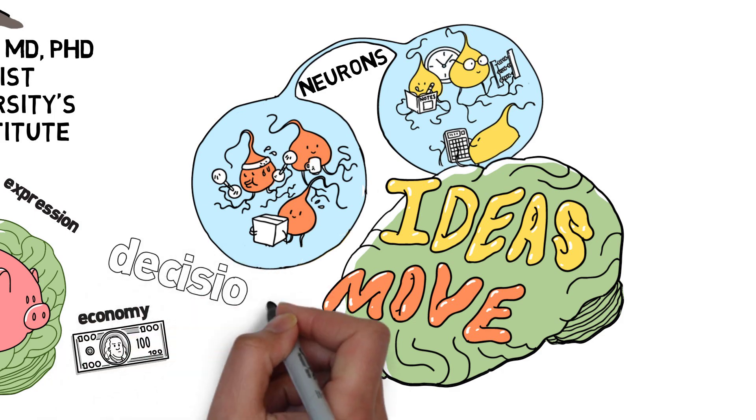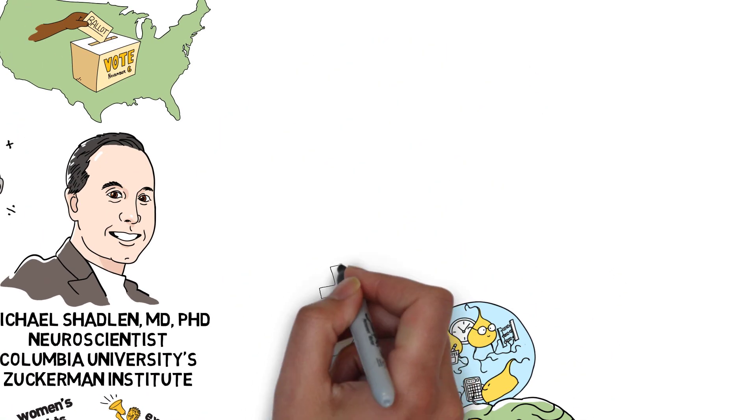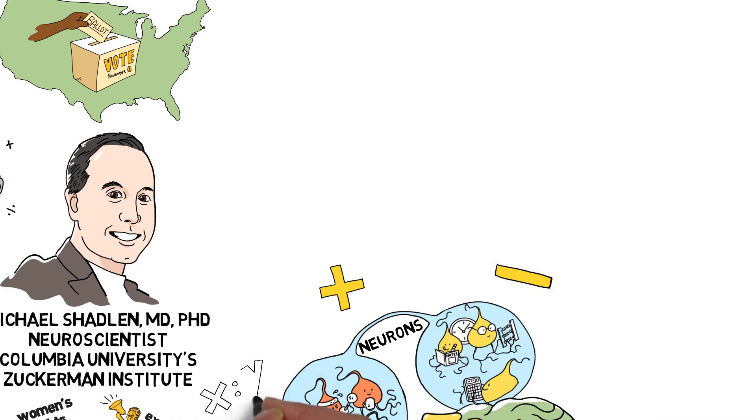These cells help us make decisions by doing math, Dr. Shadlen has discovered, by adding and subtracting and calculating ratios, logarithms, and probabilities.